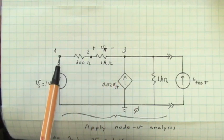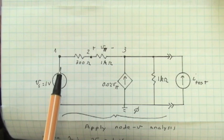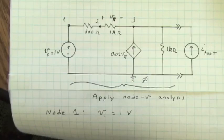At node 1, that voltage is known by inspection. V1, the node voltage at node 1 is equal to 1 volt. So we'll write that down as the node voltage 1.